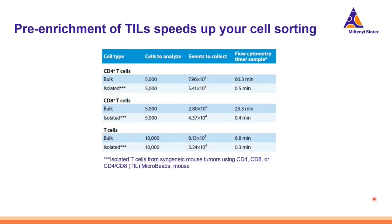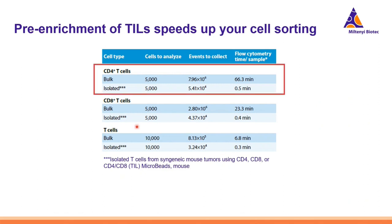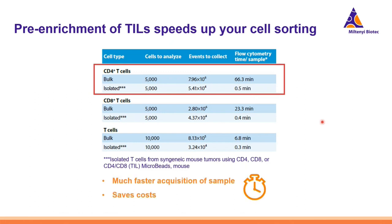Even before sorting, it can be very helpful to pre-enrich using magnetic cell isolation, particularly of TILs, in order to speed up the cell sorting process, save time, and also keep the cells more viable. For the sorting of CD4-positive T cells, sorting 5,000 cells without any pre-enrichment would require around an hour for just one sample. However, if we pre-enrich the CD4 TILs and then sort the same amount of cells, we just need half a minute. This demonstrates the value of pre-enrichment of TIL populations, especially before sorting, for much faster sample acquisition.